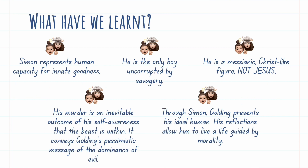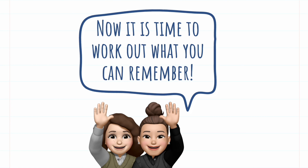So what have we learned? Simon represents the human capacity for innate goodness. He is the only boy uncorrupted by savagery. He is a messianic, Christ-like figure — but not Jesus. His murder is an inevitable outcome of his self-awareness that the beast is within. It conveys Golding's pessimistic message of the dominance of evil. Through Simon, Golding presents his ideal human — whose reflections allow him to live a life guided by morality.